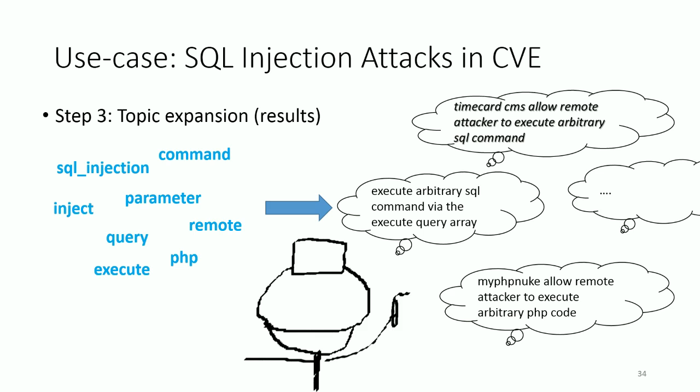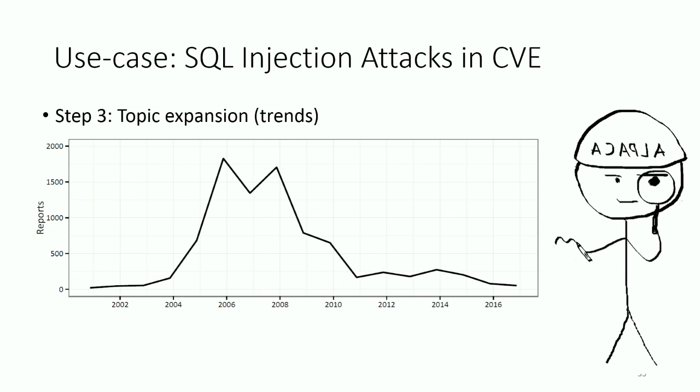As we can see, these statements further explain the topic — such as how to attack with SQL injection and what was vulnerable. Now let's see the trend. We see that SQL attacks are reported less and less after the year 2008. The reason for this decrease is up for debate, but the results suggest that SQL injection attacks are not as popular as they used to be.